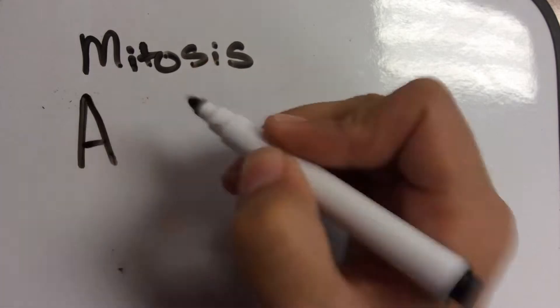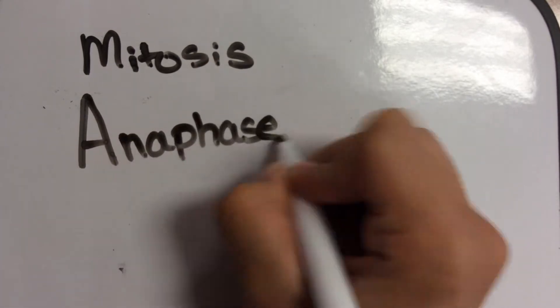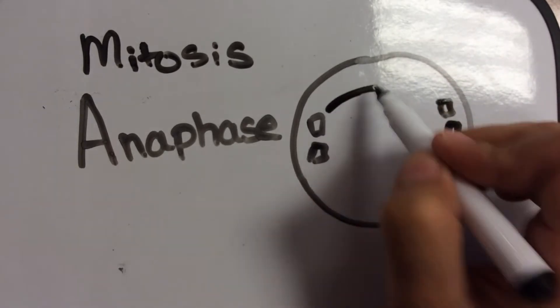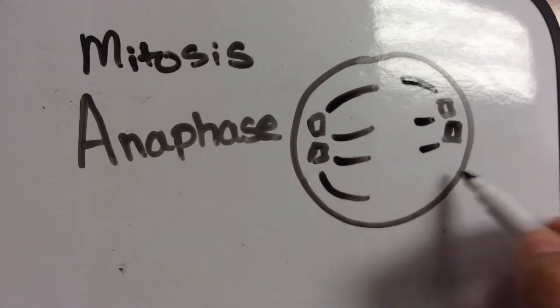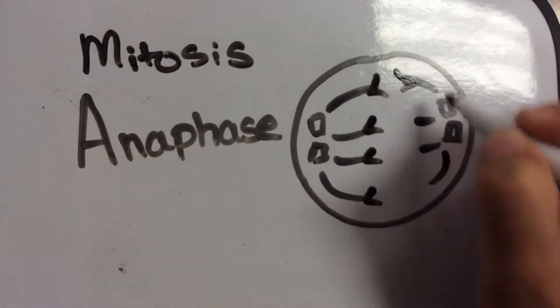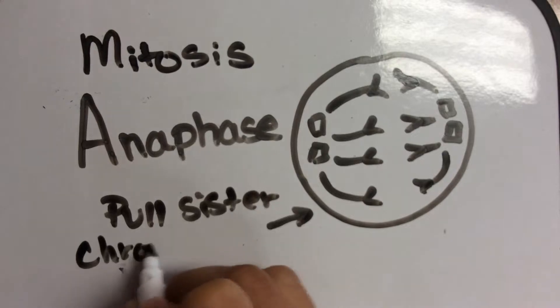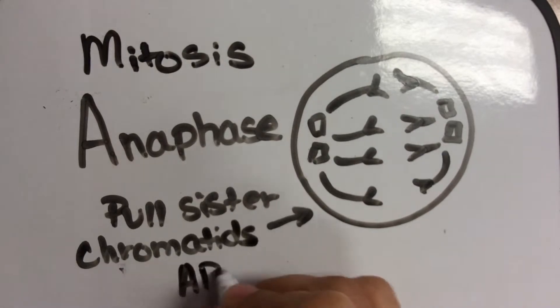Once that happens, you have the step anaphase. And in anaphase, what's going to happen is that all of the spindle fibers are going to pull the sister chromatids apart. They're going to pull all the chromosomes away from each other. So, here, you pull the sister chromatids apart, apart, anaphase.